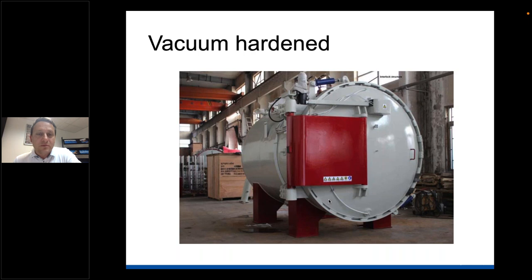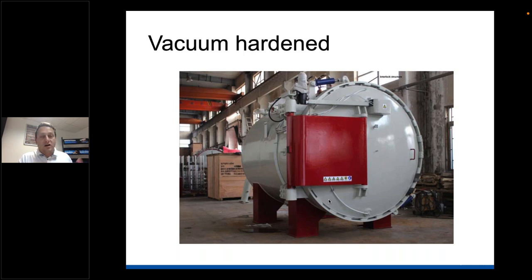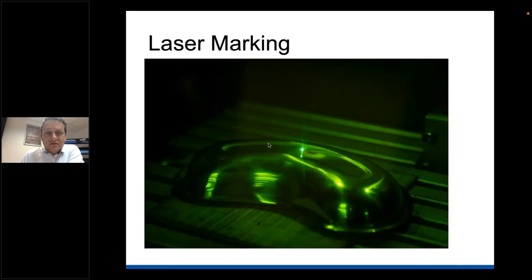Vacuum hardening is another important process. Once we have our forging with the particular carbon content - a higher carbon level means the device will come out harder - something like a rongeur would be made from higher carbon steel than an artery forcep. Unless you're a very large company, this is generally sent out to a professional vacuum hardening company. That's what a vacuum hardening machine looks like. Laser marking is one of the final processes.